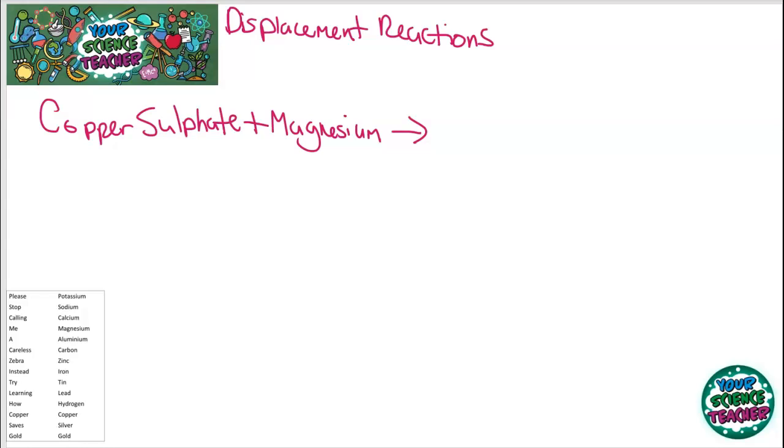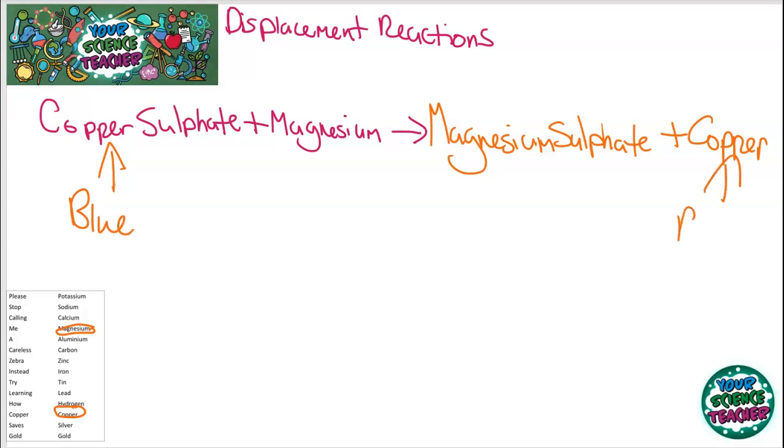So, if you were to have copper sulfate and add it to magnesium, for example, you can see magnesium is here in the reactivity series. And copper is down here in the reactivity series. So, magnesium is more reactive. So, what you'd see in this reaction is you'd see magnesium displacing the copper and making magnesium sulfate. And you'd get a byproduct of copper. It might ask you to say what you might see in a reaction like this. And you're expected to remember that copper sulfate is a blue solution. And you know that also copper is a bronze solid. Think about your coins that you have. They used to call them coppers back in the day. They're bronze solid.